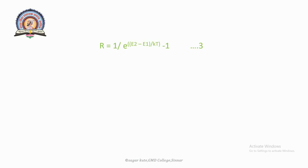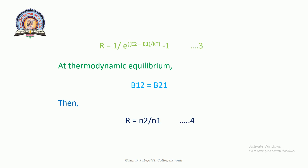From equation 3, the ratio of stimulated transition to spontaneous transition is evaluated. At thermodynamic equilibrium, B12 = B21, and then R = N2 / N1. This will be equation number 4, and N2 / N1 is very much less than 1.